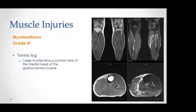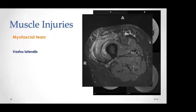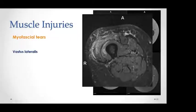Here is another example of grade 3 muscle injury involving the medial head of the gastrocnemius muscle, where the tear involves the entire proximal myotendinous junction. Myofascial tears are different from myotendinous tears — they happen between the muscle and the fascia, peripherally rather than centrally. What you get is detachment of the muscle from the fascial layer, as in this patient with iliopsoas lateralis myofascial tear.